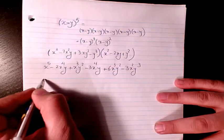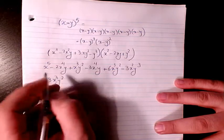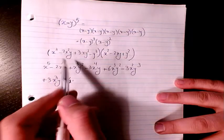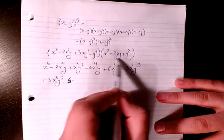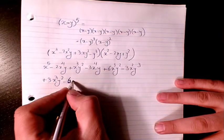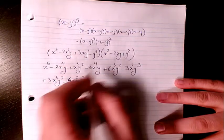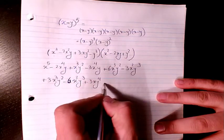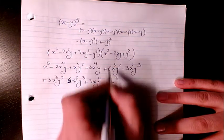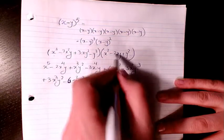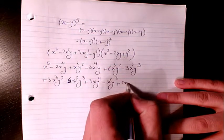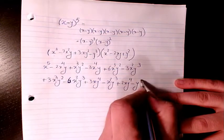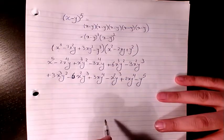Then we have 3xy squared times negative 2xy, which gives negative 6x squared y cubed. Then we have plus 3xy to the power of 4. Finally, negative x squared y cubed — when we multiply: negative times negative 2xy gives positive 2xy to the power of 4. And then negative y cubed times y squared gives negative y to the power of 5.